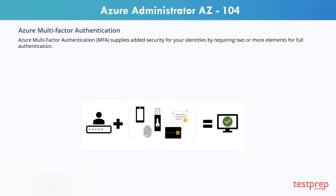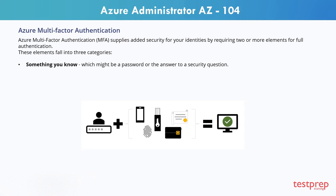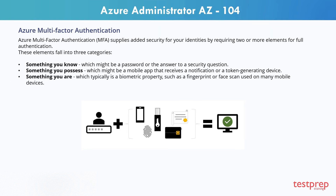Azure multi-factor authentication supplies added security for your identities by requiring two or more elements for full authentication. These elements fall into three categories: first, something you know, which might be a password or the answer to a security question; second, something you possess, which might be a mobile app that sends a notification or a token-generating device; and third, something you are, which is typically a biometric property such as a fingerprint or face scan used on many mobile devices.